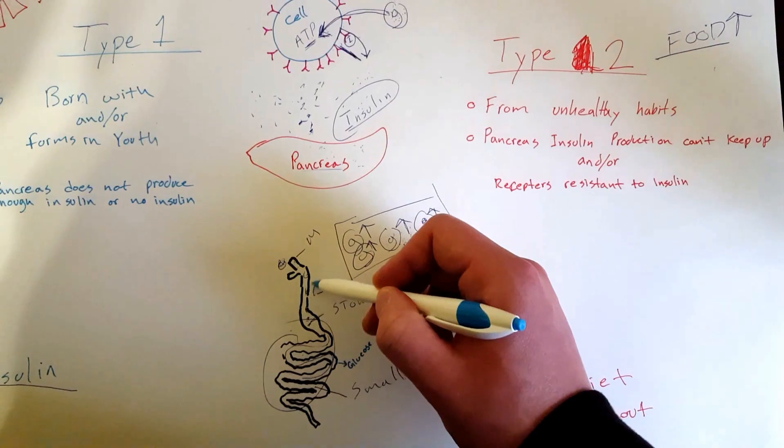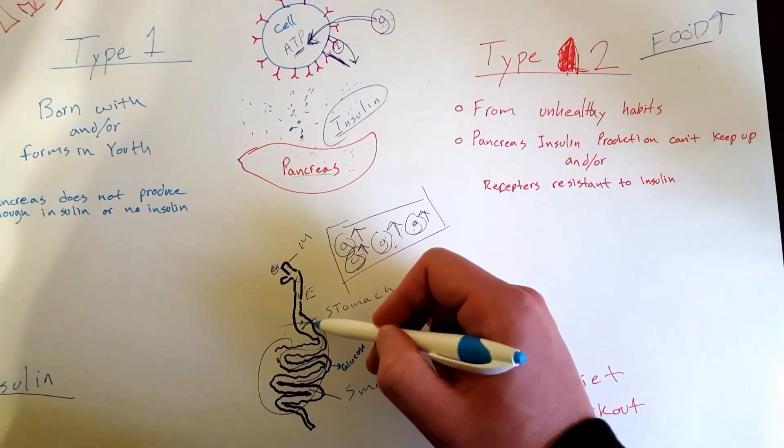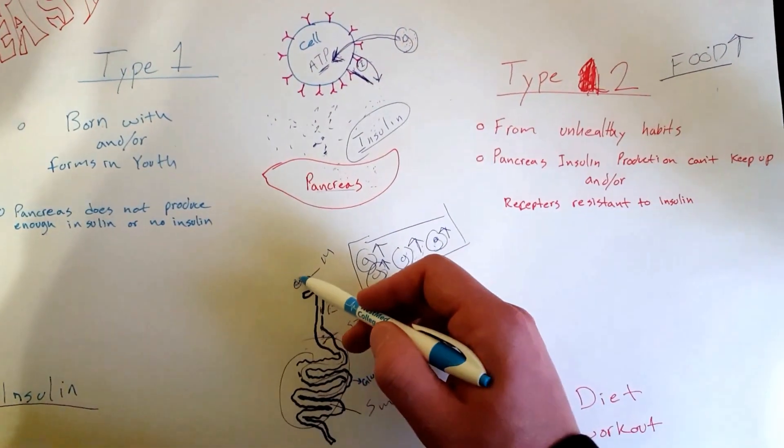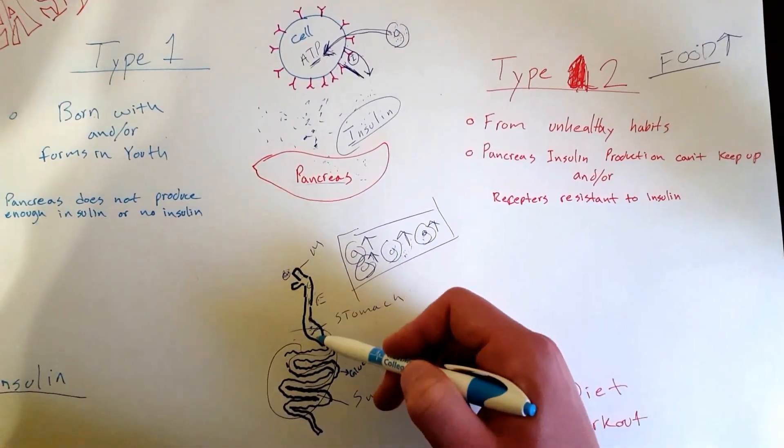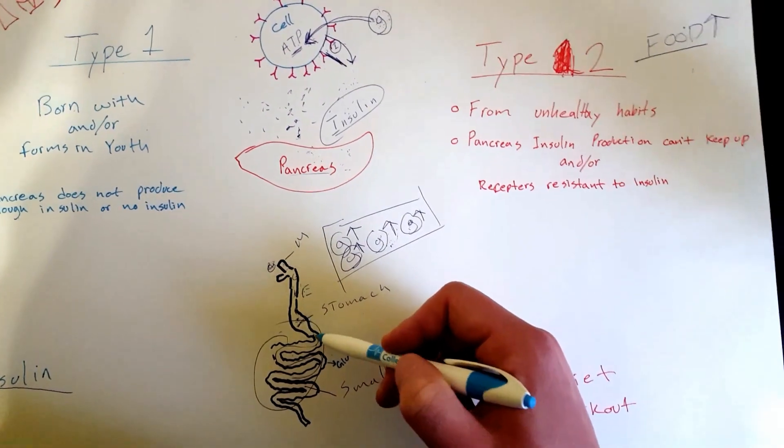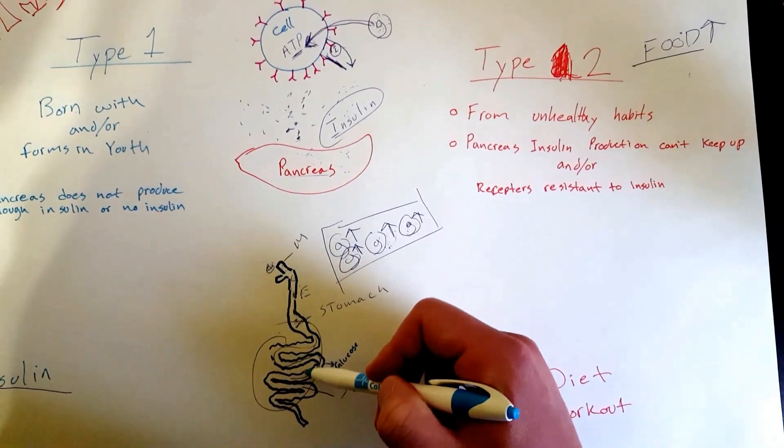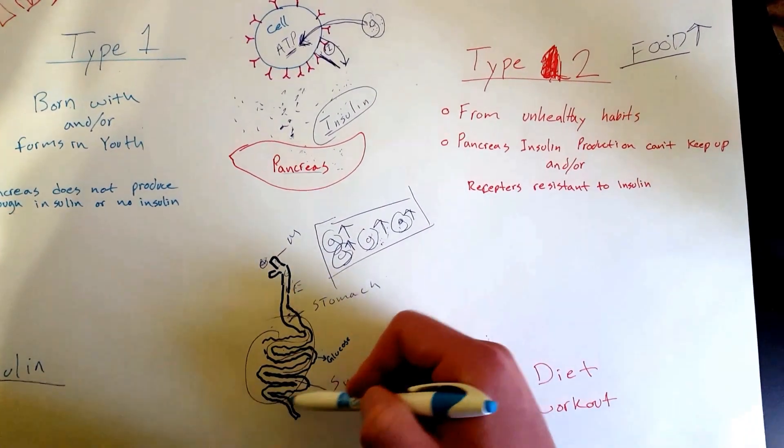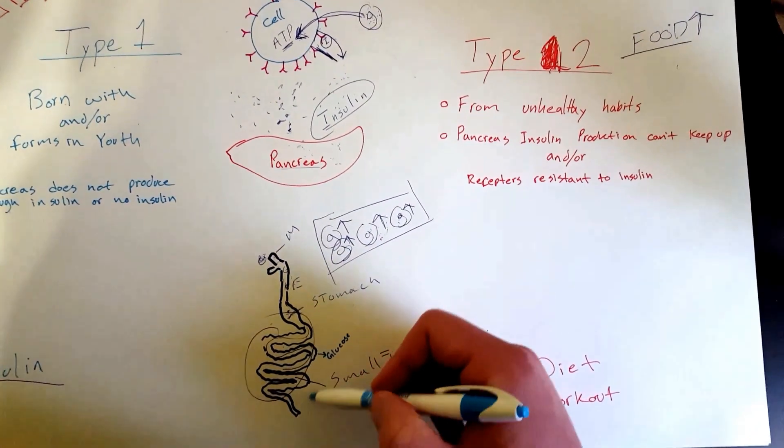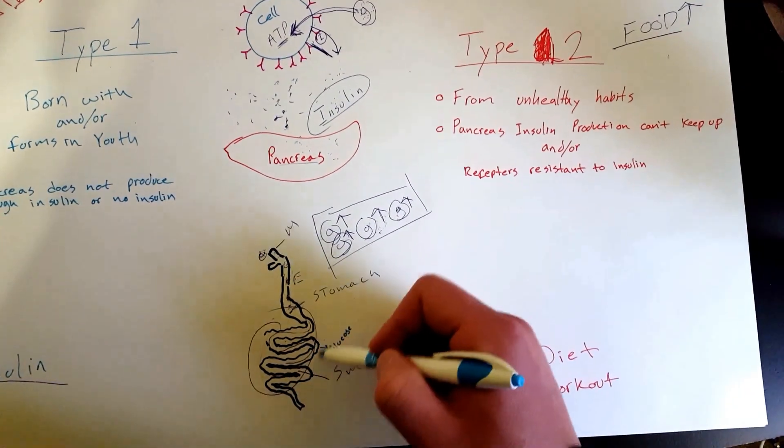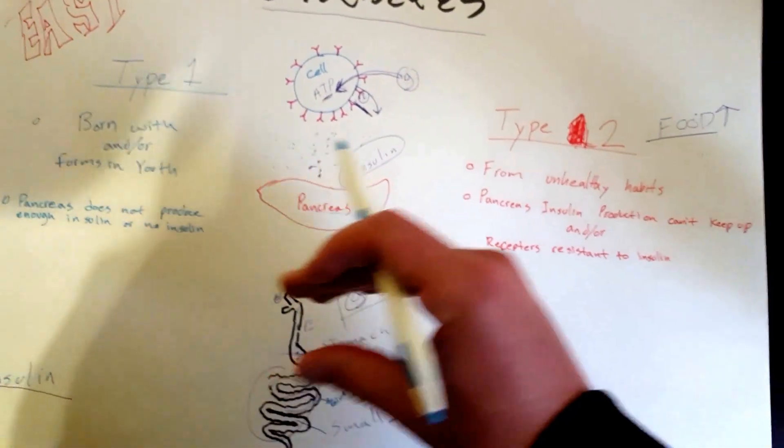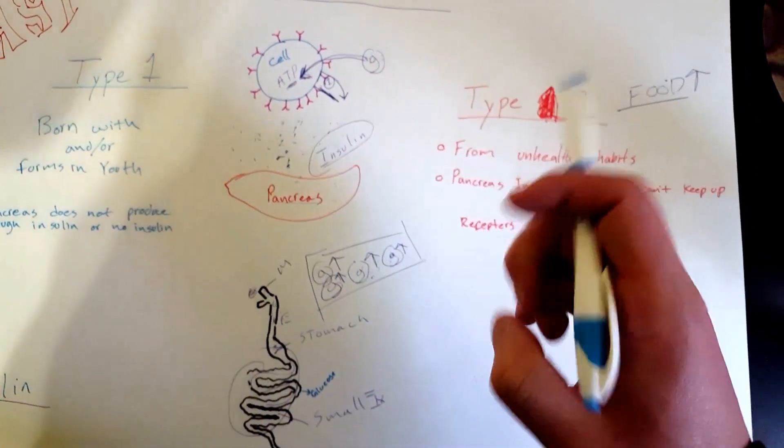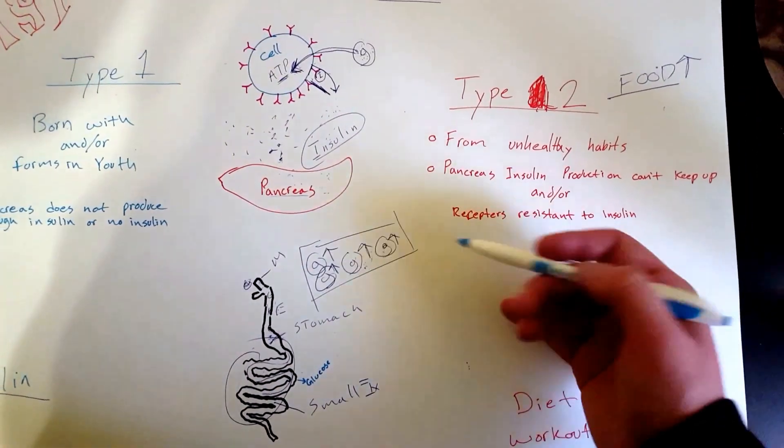Food travels through the mouth, esophagus, stomach, and small intestines. As you're eating food, it goes down through your esophagus, gets broken down in your stomach, and travels through your large intestine and small intestine. In your small intestine, the carbohydrates from that food get extracted and converted into glucose.